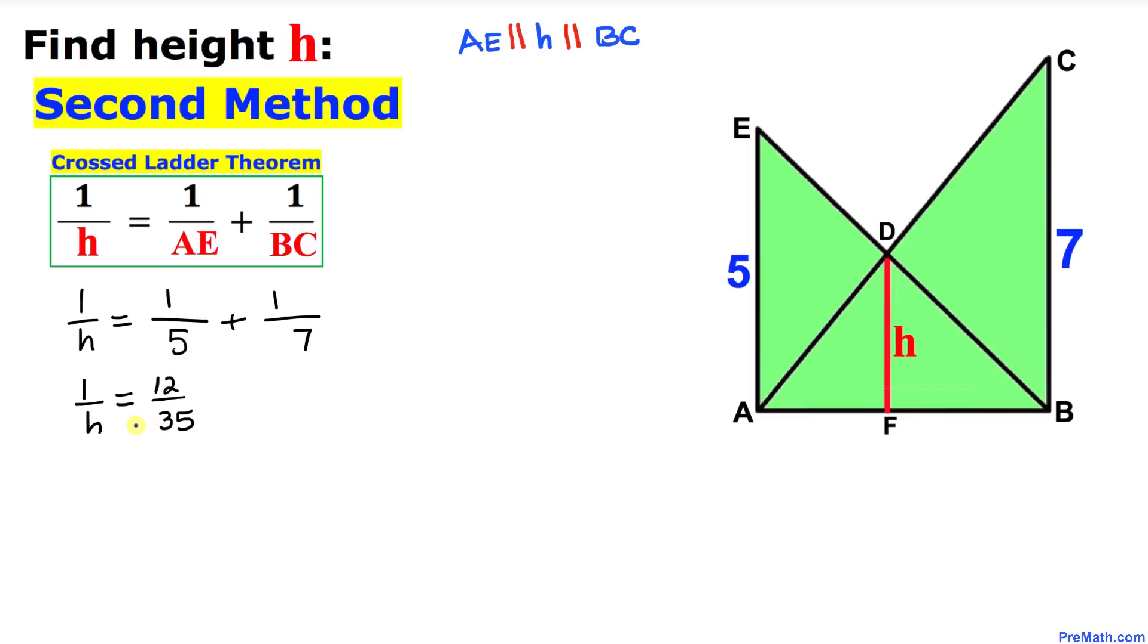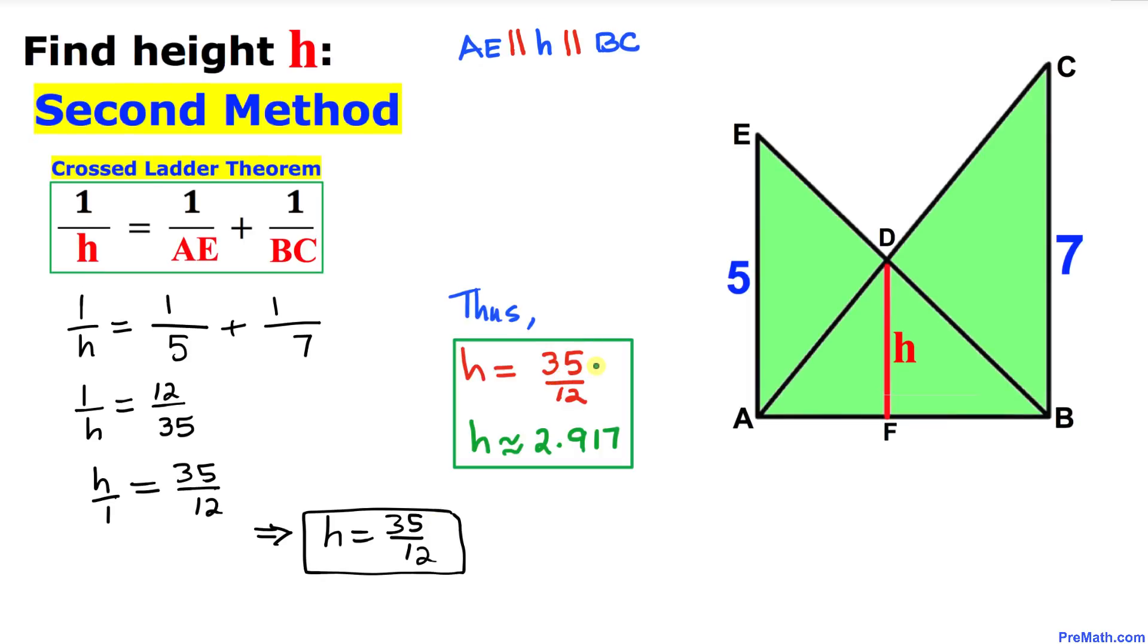Let's flip both fractions over, so that becomes H over 1 equals 35 over 12, or simply we got H equals 35 divided by 12. Thus our height H turns out to be 35 over 12.